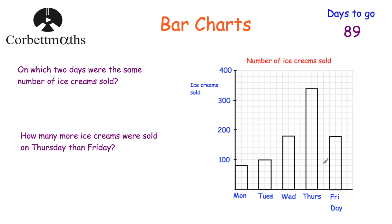Now let's have a look at bar charts. Bar charts are a useful way to represent data. Here we've got a bar chart with the title 'Number of Ice Creams Sold'. The number of ice creams sold goes up vertically — it's important to label that vertical axis. Sometimes you'd write the word 'frequency'. Horizontally we've got days of the week: Monday, Tuesday, Wednesday, Thursday, Friday.